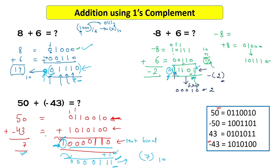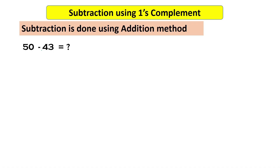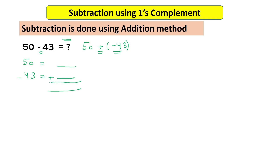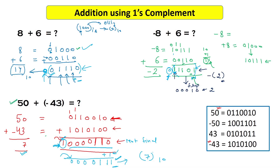Now let's move to the subtraction operation. If I have to subtract 50 minus 43, this is equivalent to adding 50 and minus 43 — these are the same both in mathematics and in the computer. So subtraction is represented as an addition operation. I represent 50 and minus 43 in ones complement and simply add them, which we have just seen gives the answer 7.